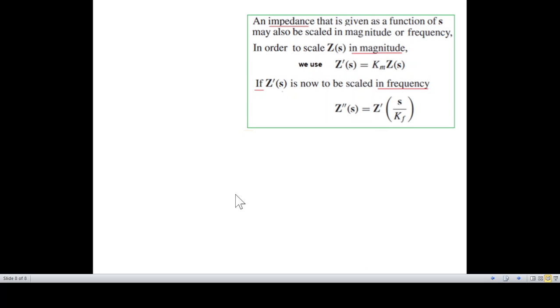And now that we have found Z_in for the first circuit, the non-scaled circuit, we can find Z for the scaled circuit by using this formula. First of all we'll do the magnitude scaling. We multiply Z_s, or Z_in that we found, by the Km factor, and what we get is called Z' of s. And then we transform this by the frequency factor to get it scaled in the frequency. And our answer will be Z'' of s, and this is the final Z_in that we want.